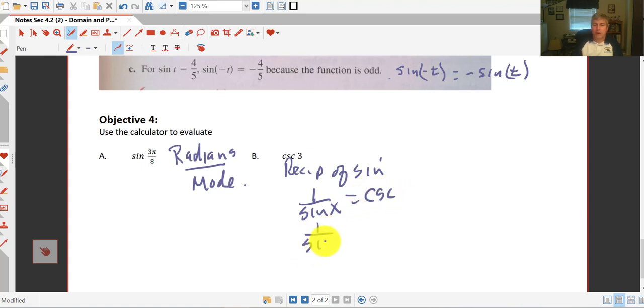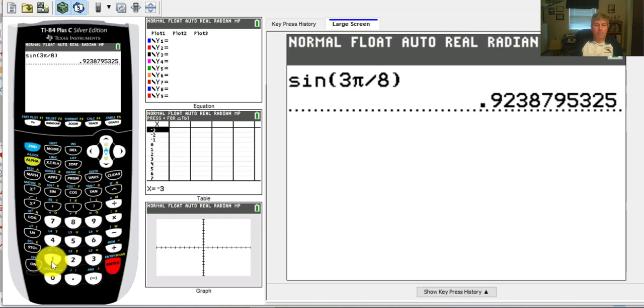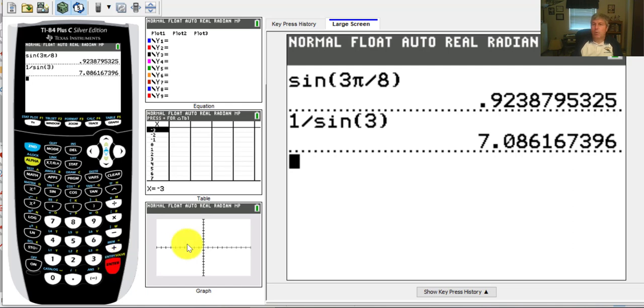So 1 over the sine of 3. So I input that into my calculator. 1 divided by sine. My angle is 3. And this is 3 radians now. 3 radians. Oh, that's right around pi. That's right around 180 degrees. Just a little shy of it. And we get 7.08616.